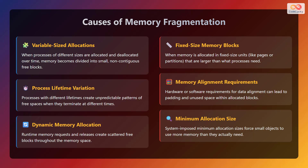There are various reasons that cause memory fragmentation. Let's look at the causes of external fragmentation. One of the reasons is variable sized allocations. When processes of different sizes are allocated and deallocated over time, memory becomes divided into small, non-contiguous free blocks. Another reason is process lifetime variation. Processes with different lifetimes create unpredictable patterns of free spaces when they terminate at different times. The other reason is dynamic memory allocation.